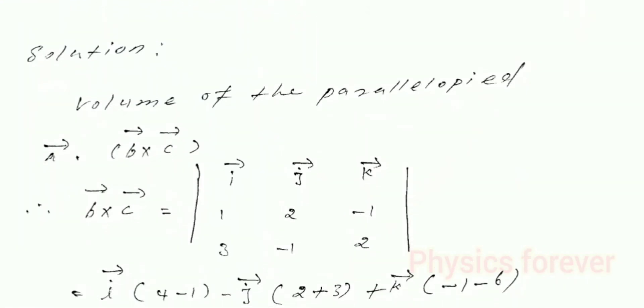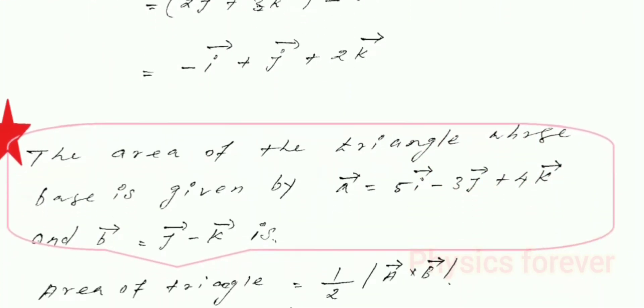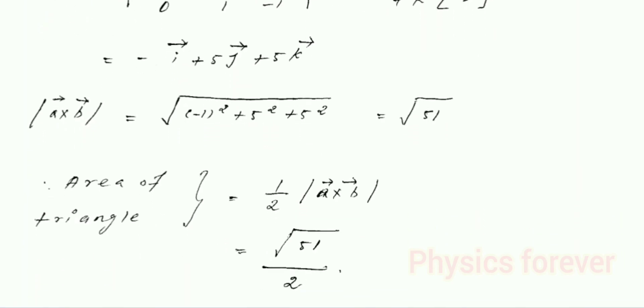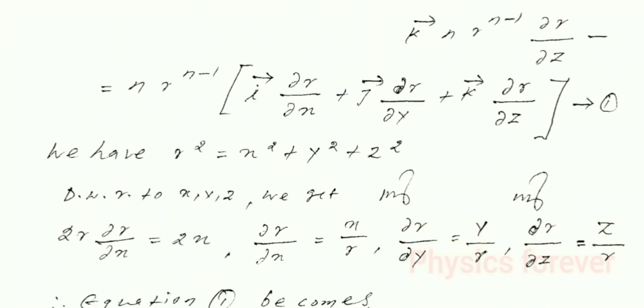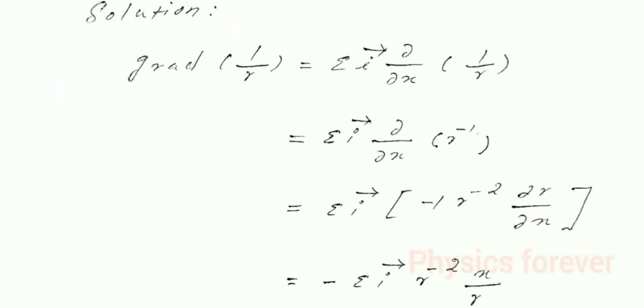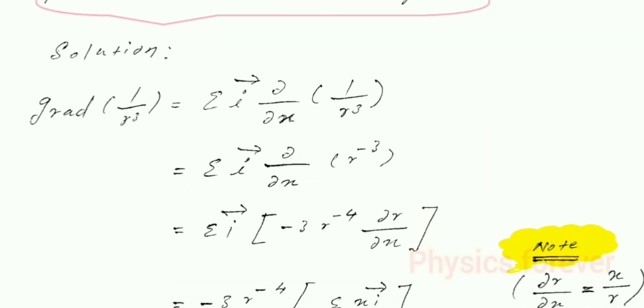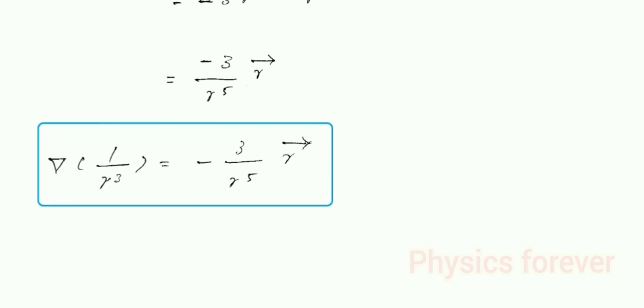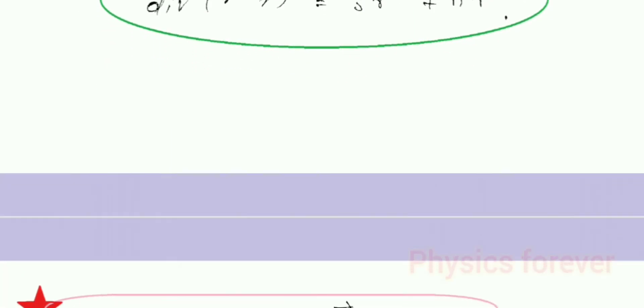These are all the problems about gradient, divergence, and curl. The most important ingredient is: del(1/r) is equal to minus r-vector by r-cubed — a repeated key question in the law. If you find the value of del(1/r³), it is equal to minus 3 divided by r to the power 5, times r-vector. These are the most important problems we have to derive in this study material, so please go through it one or two times.